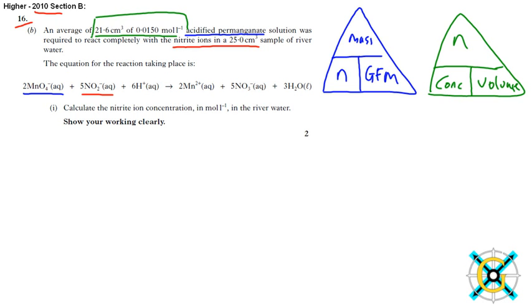So let's start by working out the number of moles of acidified permanganate. First of all, we've got to change this 21.6 cm cubed into liters, which means dividing it by 1000. Therefore, it equals 0.0216 liters.